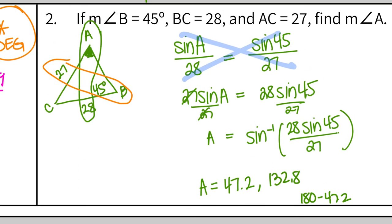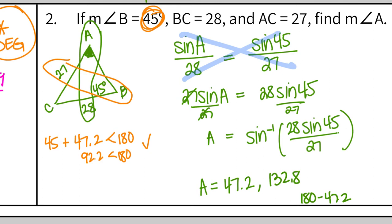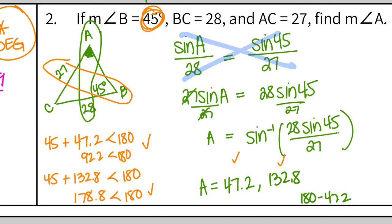So how do you check? 45 was given to us, so that has to be part of our triangle. Check the first one: 47.2 plus 45 gives 92.2, which is less than 180 — so this first one works. What about 132.8? Adding 45 and 132.8 gives 177.8, which is still less than 180, so they actually both work. We don't know which one it is — it could be either one. I know for a fact there is a question like this on your test, so make sure you are double-checking that both work because your answer choices will be a little tricky.